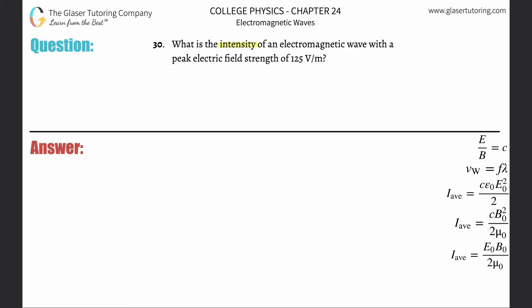Number 30. What is the intensity of an electromagnetic wave with a peak electric field strength of 125 volts per meter?